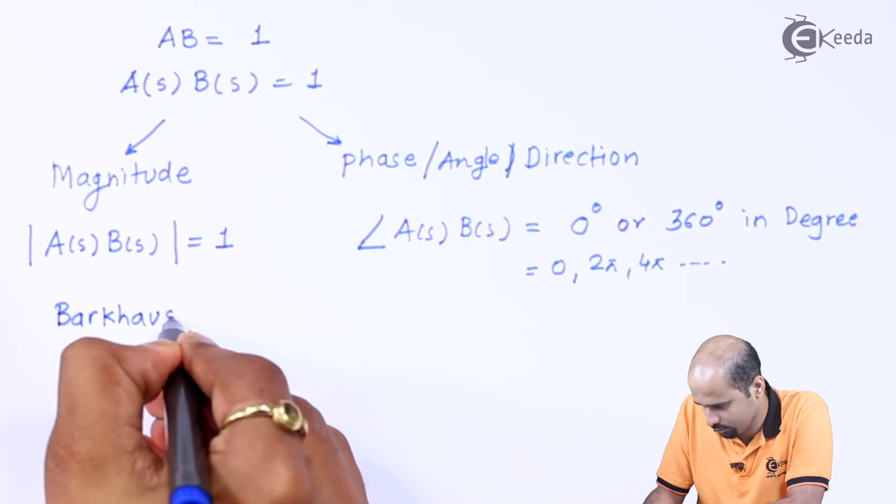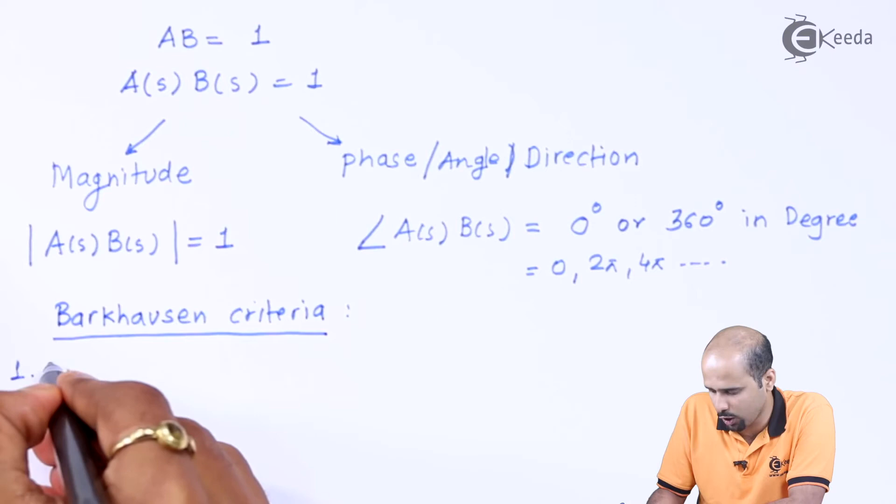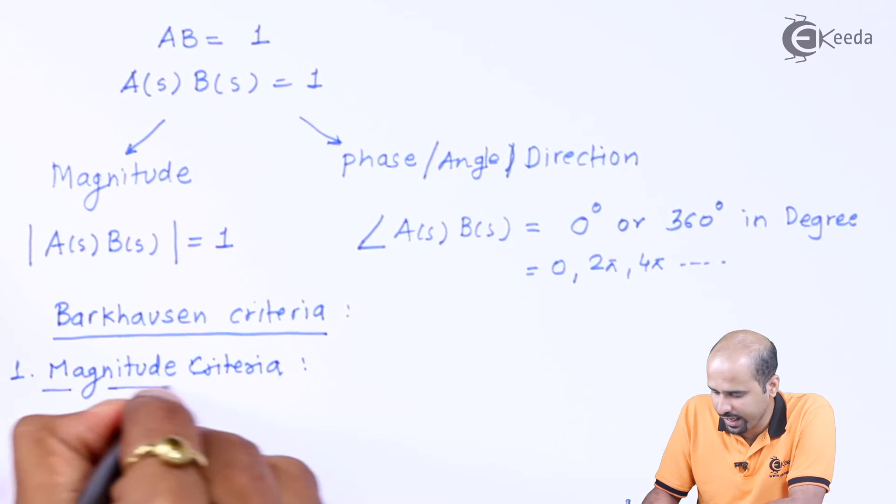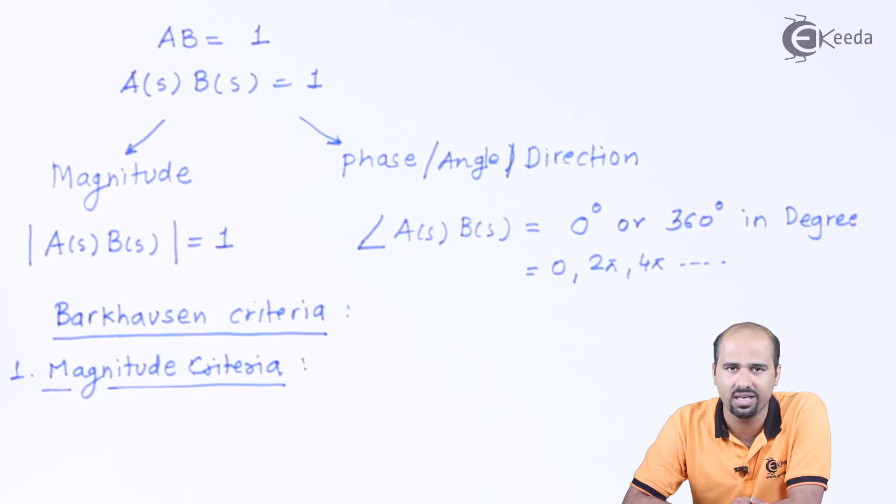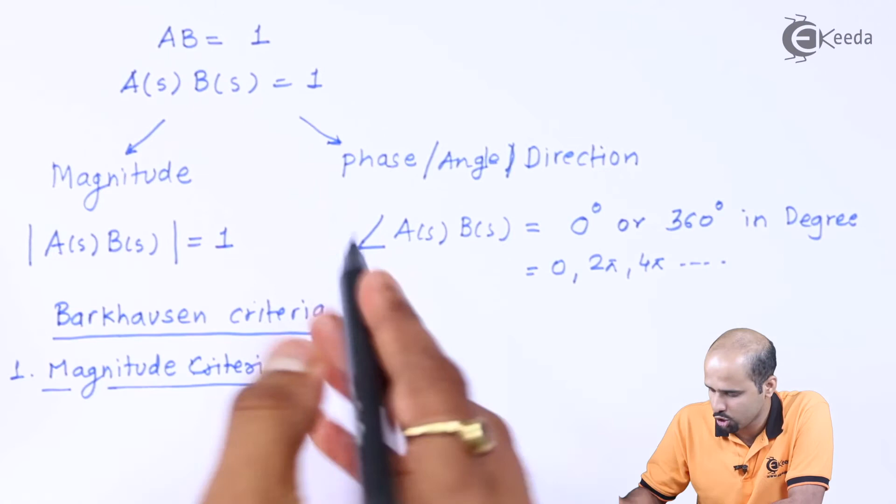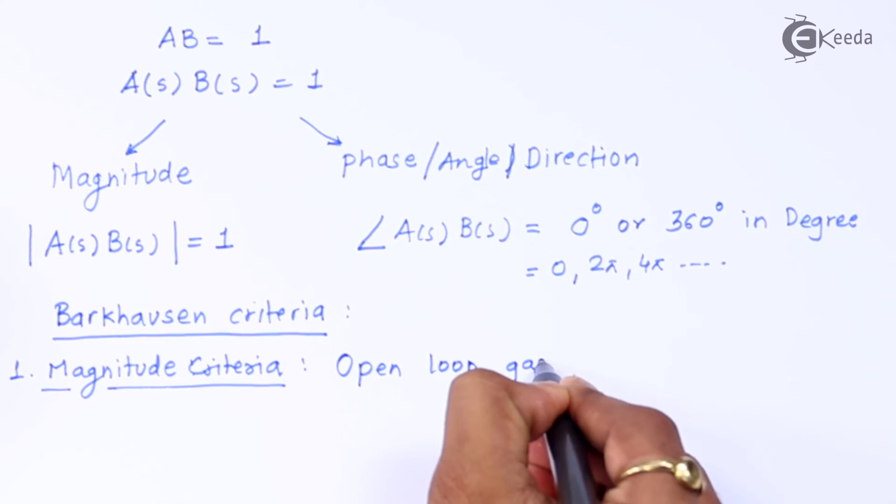So we will give the heading as magnitude criteria. Magnitude criteria is saying that the product of feedback gain and forward block gain is equal to 1, that means the product, the open loop gain is equal to 1. AB is also called as open loop gain. So I will say that it's nothing but open loop gain should be unity.